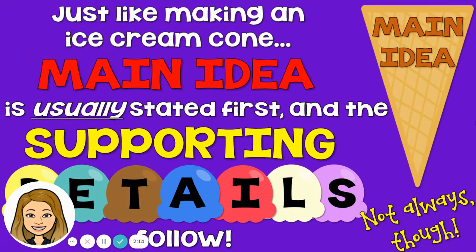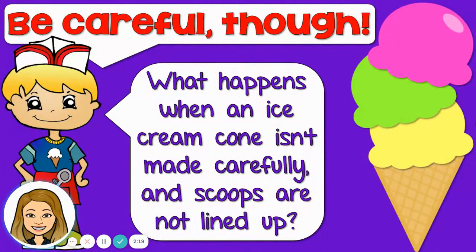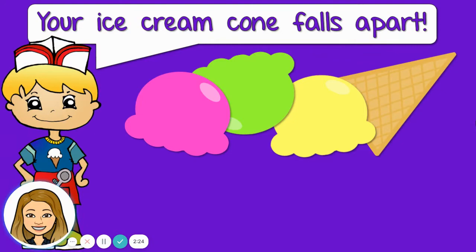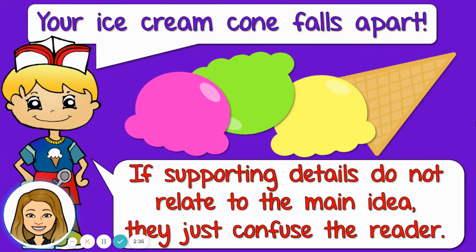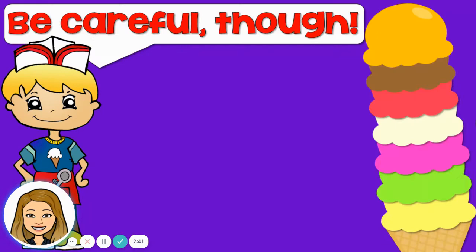Not always though — most of the time, this is the rule. Be careful though. What happens when an ice cream cone isn't made carefully and the scoops aren't lined up? Your ice cream cone falls apart. Same thing in a story — if your supporting details do not relate to the main idea, they're just going to confuse the reader and the story isn't going to make any sense.